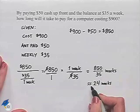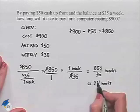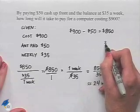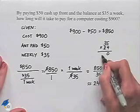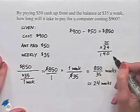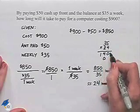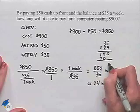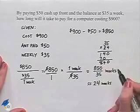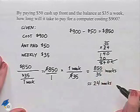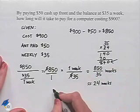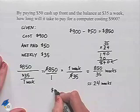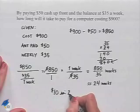But if we take $35 and multiply by 24, we get $840. Notice that in 24 weeks, we've only paid $840. So we end up having $10 more to pay in the 25th week.